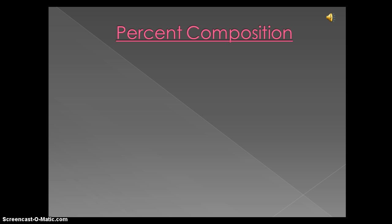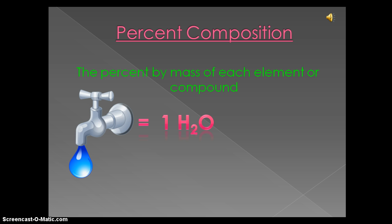Percent composition is the percent by mass of each element or compound. Using water as an example, in any given amount of water, 89% of it would be made up of hydrogen, and 11% of it would be made up of oxygen.